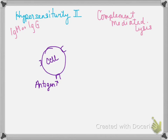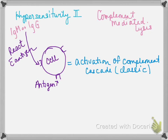The first of the three is complement-mediated lysis. Think about hemolytic anemia from a mismatch transfusion as an example. IgM or IgG reacts with an antigen on the cell, and this triggers the activation of the complement cascade — specifically the classic pathway.